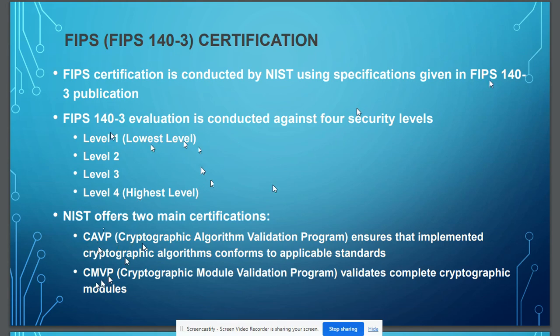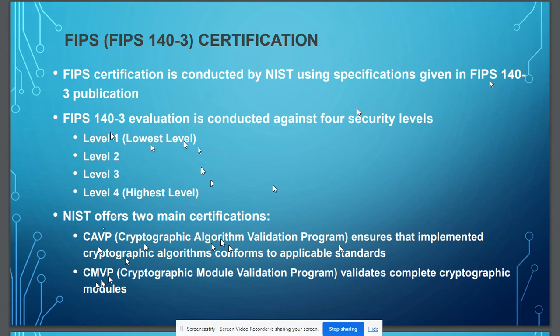CAVP is the Cryptographic Algorithm Validation Program. It is simply verifying the algorithms implemented by you — for example, verifying that AES is working properly, that your RSA signature is working properly. It provides an input to the algorithm and then checks the output to confirm the algorithm is doing the correct thing. It is the easiest certification to achieve if everything is working properly.